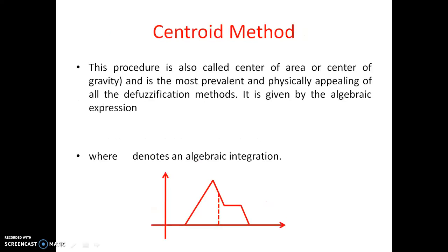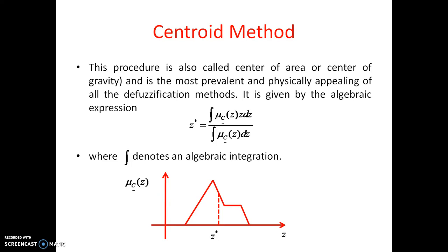The second method is the centroid method, also called center of area or center of gravity. This is the most prevalent and physically appealing of all defuzzification methods because it gives the center value of the area. The algebraic expression is: z* = ∫μ_C(z)·z dz / ∫μ_C(z) dz, where μ_C(z) is the equation of the line.